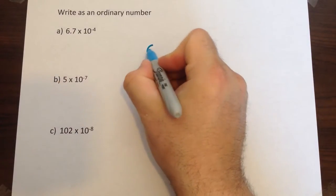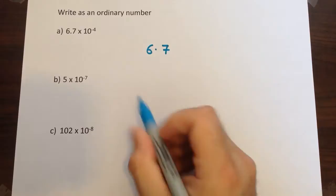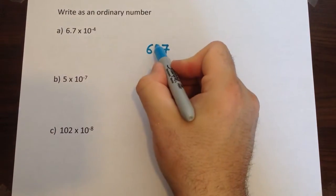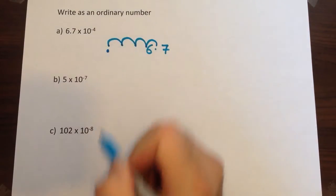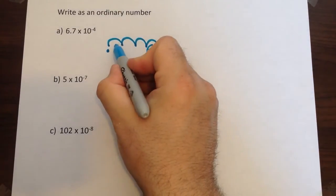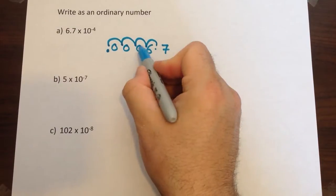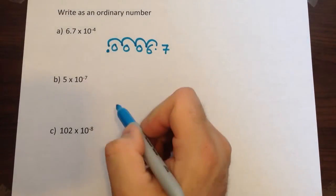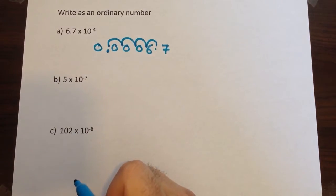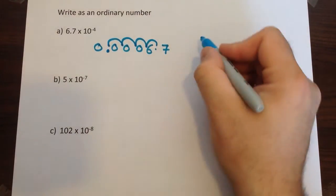Start with the original number 6.7. Now we're going to move four places to the left, so one, two, three, four decimal points. Fill in the gaps with zeros and remember that's not there anymore, it's moved to there. So we need to put another zero at the start to make it into a correct number.